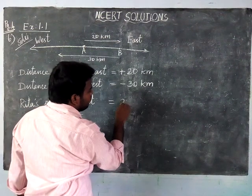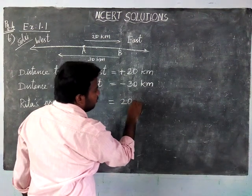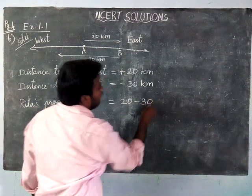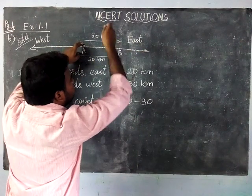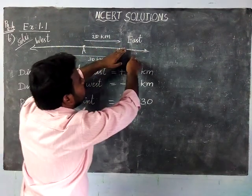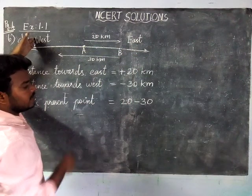20 minus 30. Because he went to one direction east, then from the same road he came back to the west, 30 km.